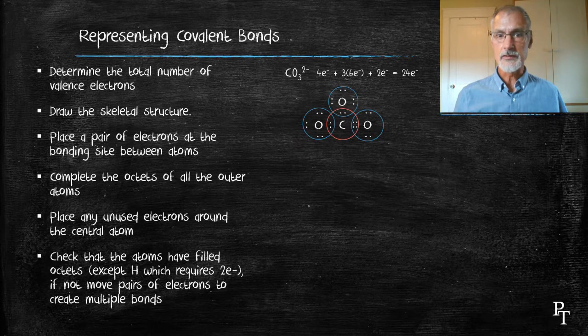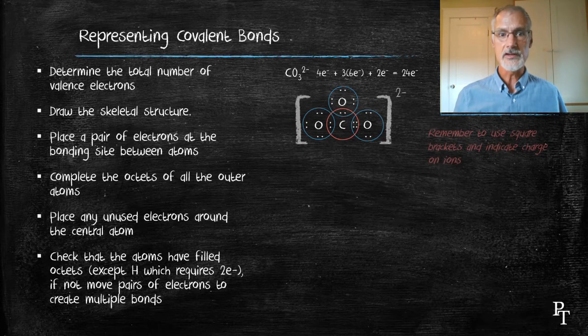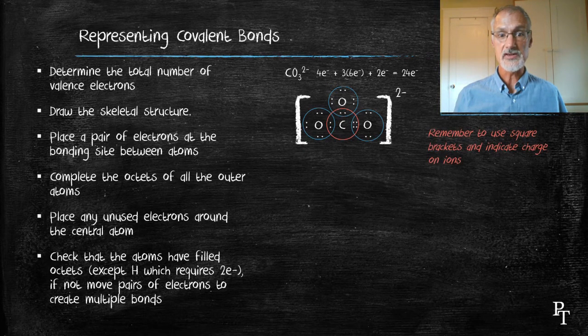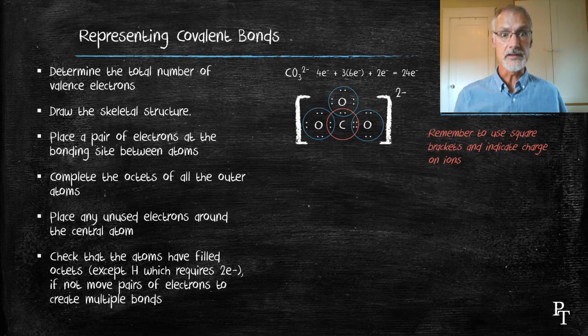One of the things you need to remember when you're drawing ions is to incorporate the use of square brackets and to place the charge. It's incomplete if you don't have that present. So whenever you have an ion present, be sure to incorporate the square brackets.